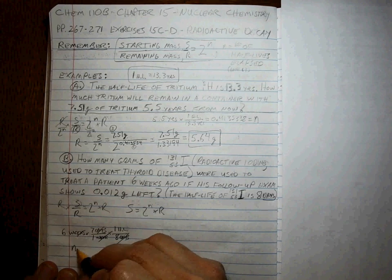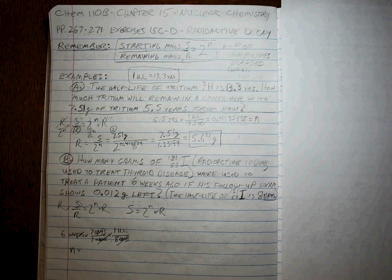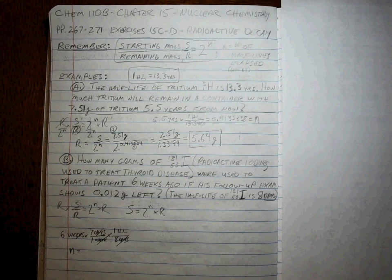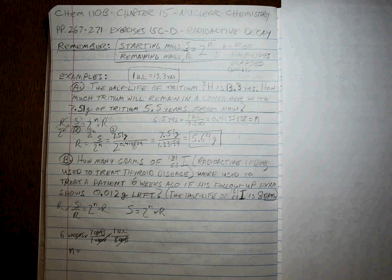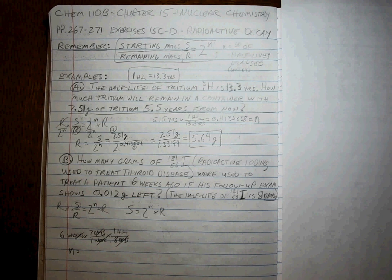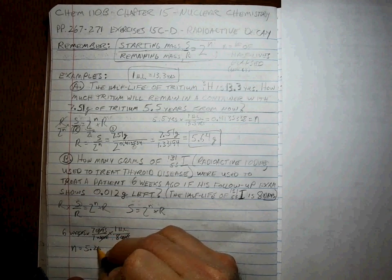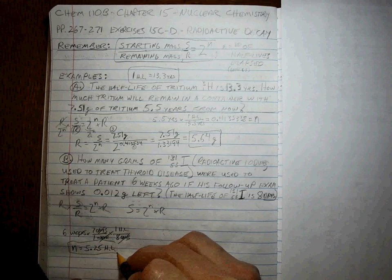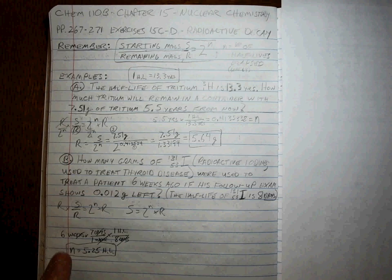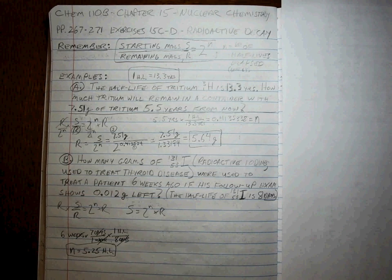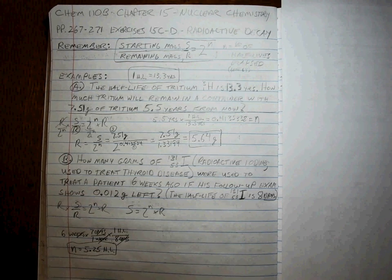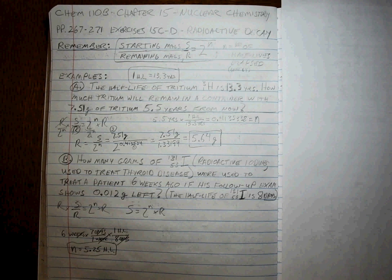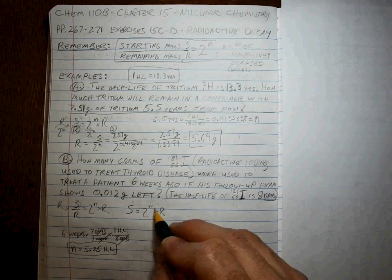So N is going to be equal to this many half-lives. Now six weeks, let's say that's exact. So six times seven is basically 42 days divided by eight. Five and a quarter half-lives have gone by. All right, every eight days is one half-life. That's a total of 42 days. So five and a couple of parts, about like a fifth of another half-life. So that's what goes into N.